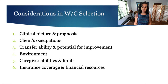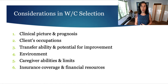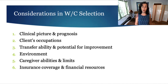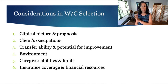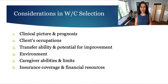The environment they're moving through — consider both inside and outside environments. The abilities and limits of the caregivers: if a person is expected to be 100% independent because they live alone without access to caregiving support, that's a really different picture than someone who has a lot of support. Also insurance coverage and financial resources — wheelchairs run the gamut from very inexpensive big-box-store options all the way to very highly specialized, modern, technological, computerized, intensive devices.